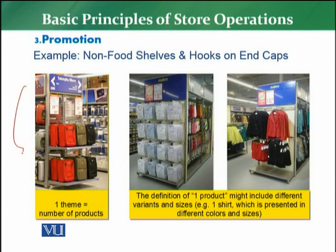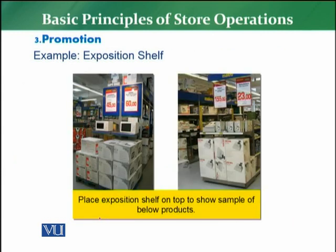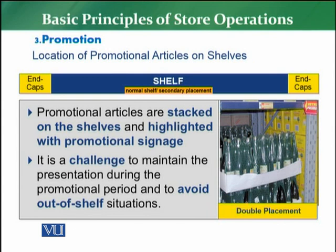For a shelf example: 2 pallets — pallet number 1 and pallet number 2 — means two different products, plus one shelf. For thematic display, one theme such as a bag theme can feature multiple products. For clothing — shirts, coats, jackets — you hang them on hooks. An end cap display normally features one product or one theme. For exposition display, such as a microwave example, you expose the product on the shelf so the top product is visible to the customer.